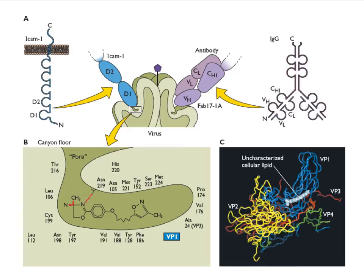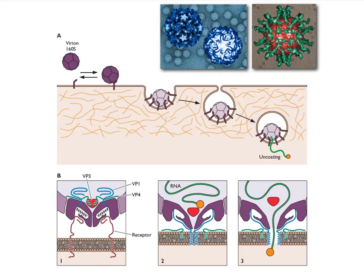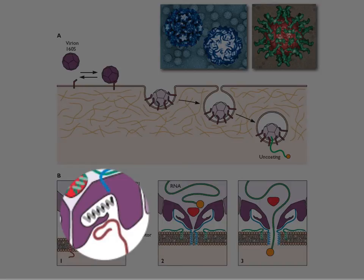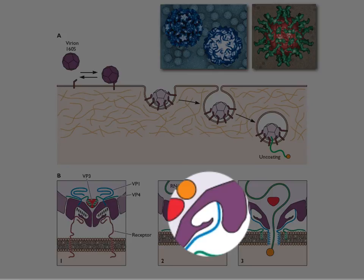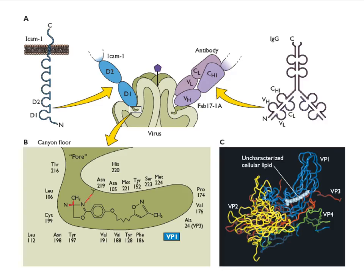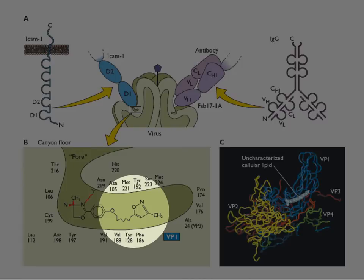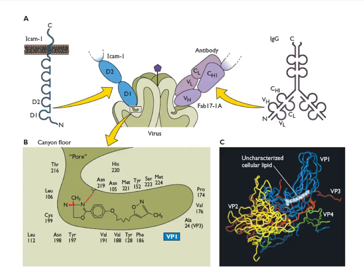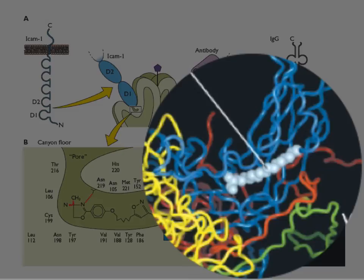This lipid pocket can be exploited as an antiviral target. A series of antiviral drugs were selected by their ability to displace the lipid from that pocket — they fit in so tightly that the receptor can't displace them. Here's an example of such a compound bound in the pocket where the lipid would normally be. It displaces the lipid and binds with such high affinity that when the virus sits on a cell receptor, it can't uncoat its RNA. That's why it's an antiviral compound. The receptor would normally push the lipid out from above, but if the antiviral drug is there, it can't displace it because it binds with too high affinity.